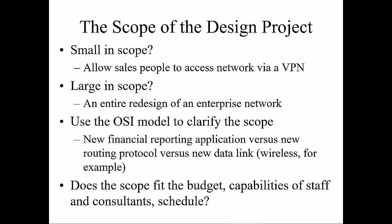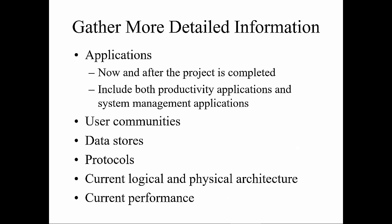Understand the scope of the design project — is it a small scope or a big scope? Can you break larger scopes into smaller milestones so you can complete them? Use the OSI model to clarify the scopes. Use the scopes to help fit the budget, capacity, and scheduling so you can successfully complete the project. Gather more detailed information as required — things like user communities, data stores, the protocols, the current architecture and performance. You should also be looking at other business needs like applications. One of the first things in the research should be applications and how they are going to be impacted.